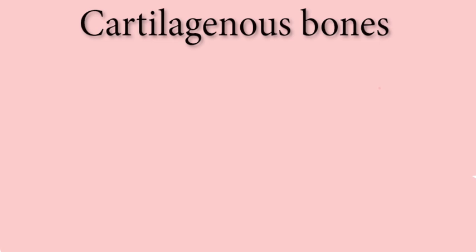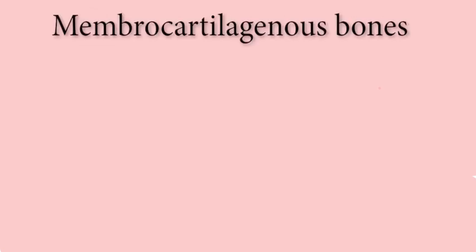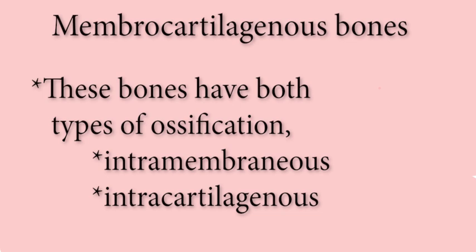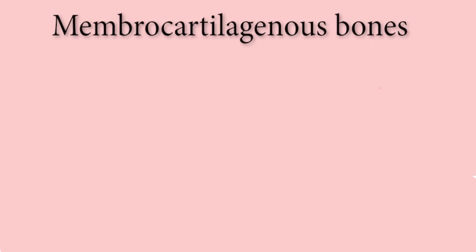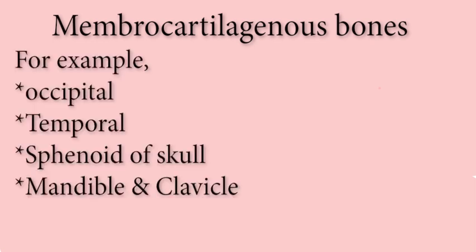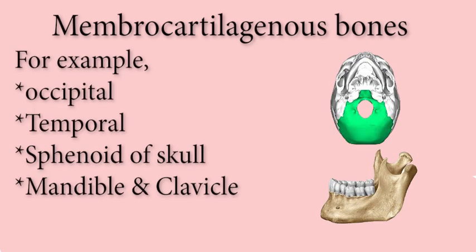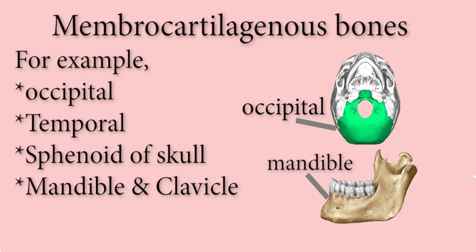The last group of developmental ossification is membrocartilaginous bones. These bones have both types of ossification: intramembranous and intercartilaginous. For example, occipital, temporal, sphenoid of skull, mandible, and clavicle.